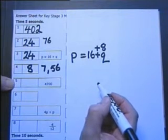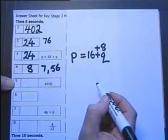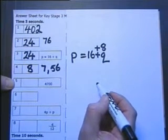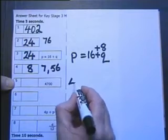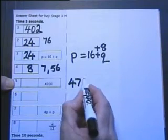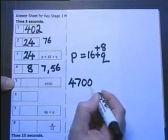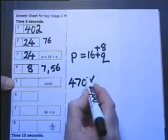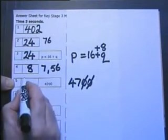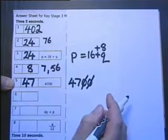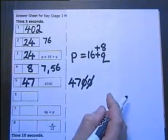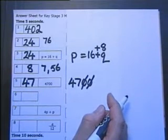Number 5: Divide the number on your answer sheet by 100. Crossing those two noughts will divide the number by 100, so your answer is 47.